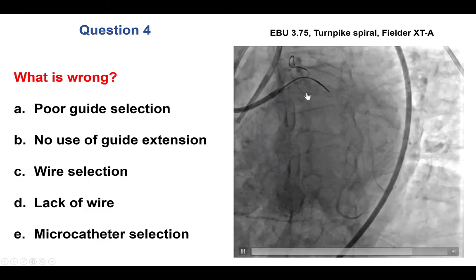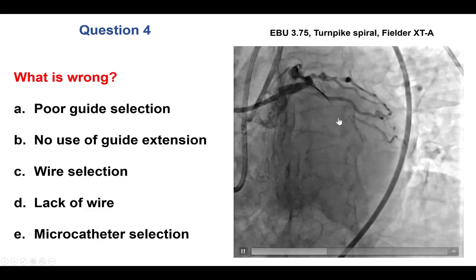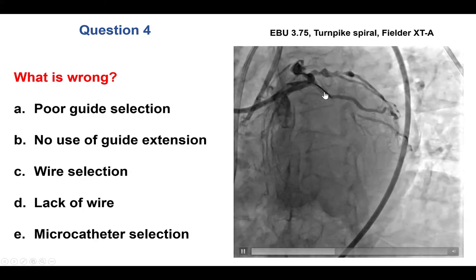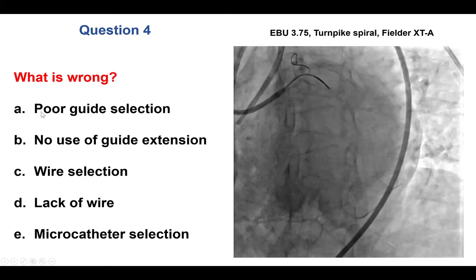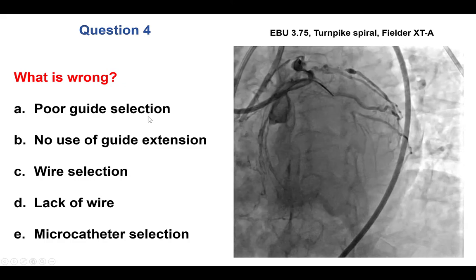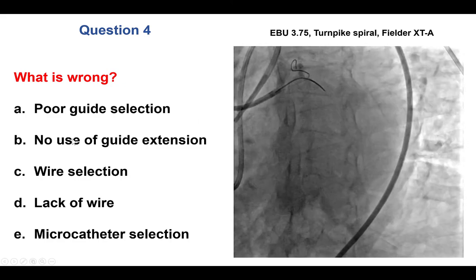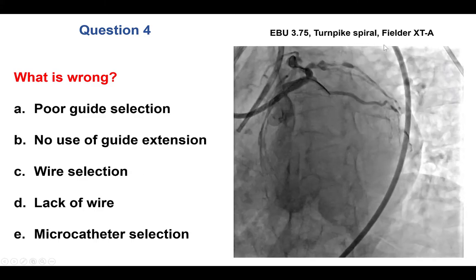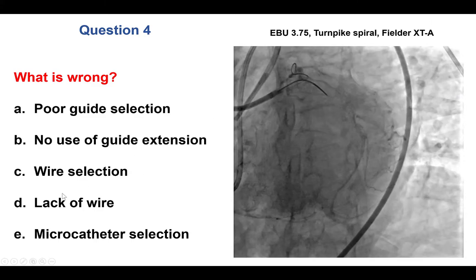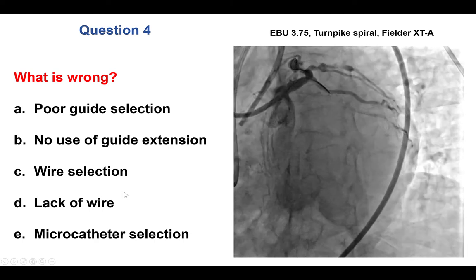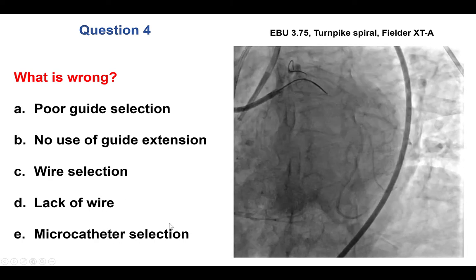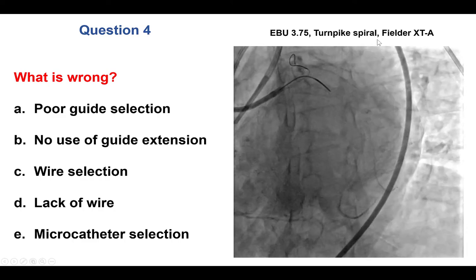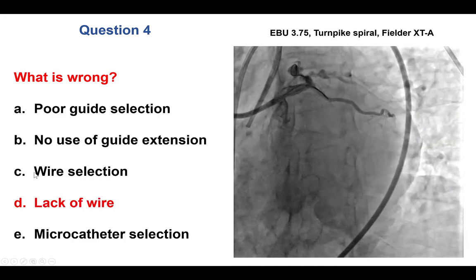The next question is about the approach to this mid-circumflex CTO — what is wrong with the current illustrating approach? Options include: poor guide selection (EBU-375), no guide catheter extension, wire selection (Filter XTA), lack of a guide wire, and microcatheter selection (Turnpike Spiral). The answer is lack of a guide wire. The EBU-375 is a great supportive guide for left-sided CTOs, and the Turnpike Spiral microcatheter and Filter XTA wire are standard choices.